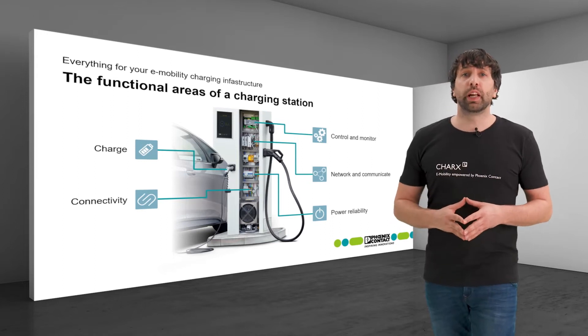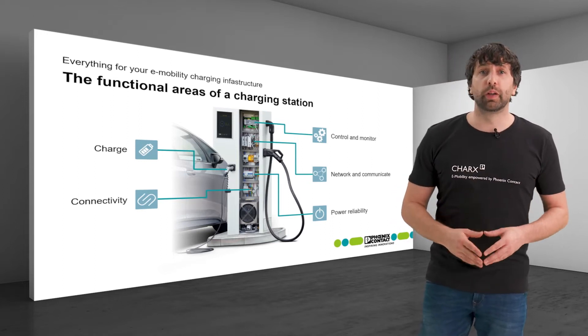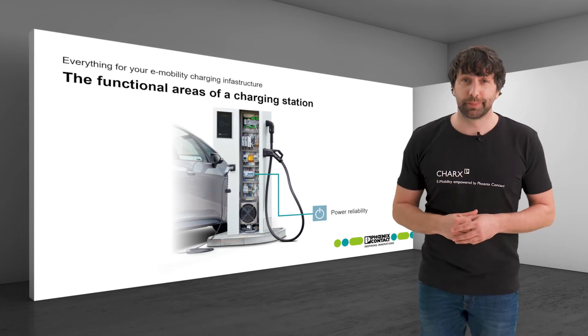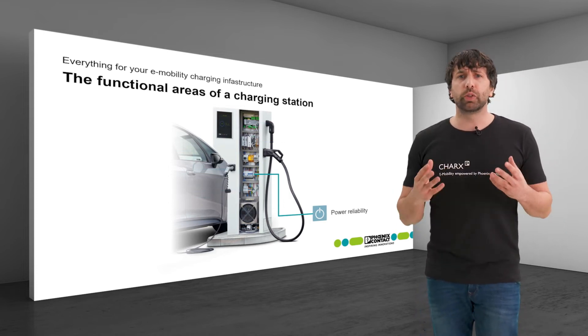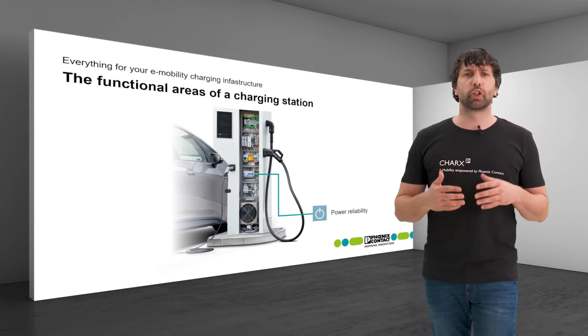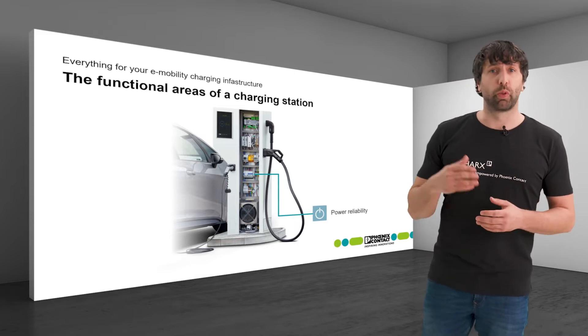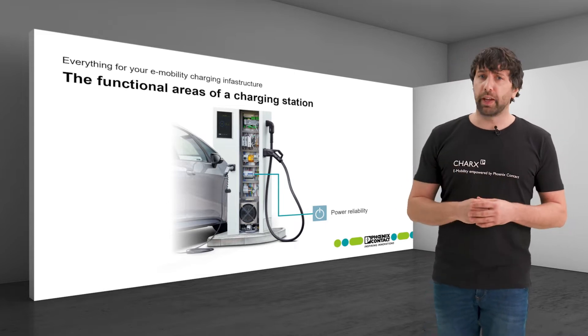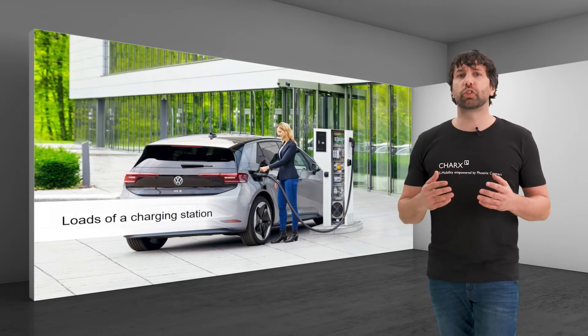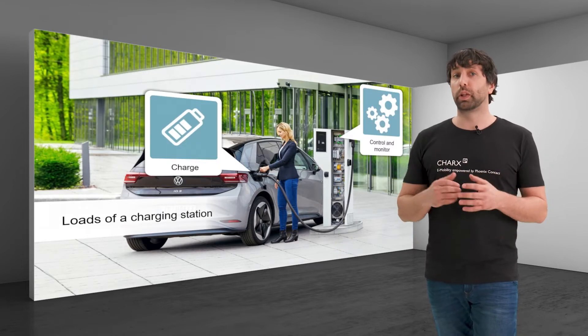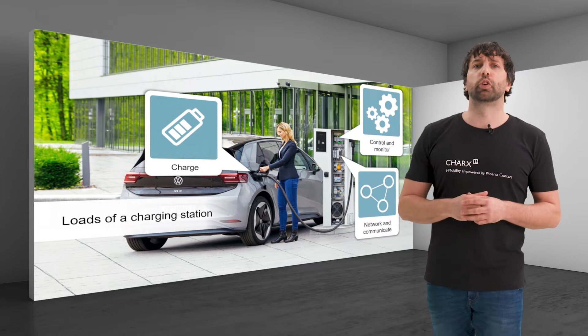In this video I will tell you all about the functional area power reliability. The issue is how to safely and reliably supply the components of the charging station with power and protect them from failure. These components are found in the functional areas charge, control and monitor, and network and communicate.